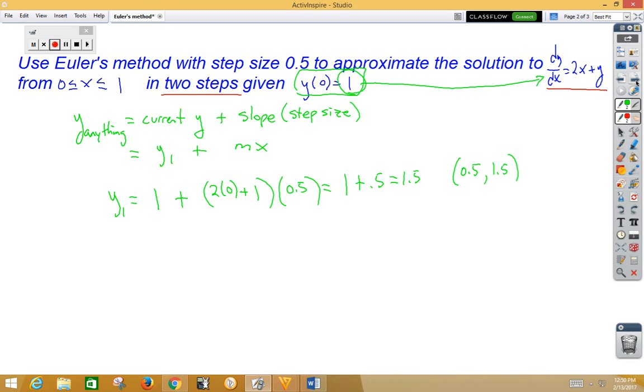Well, now we need to make another step. So we need our current y value, and our current y value is now 1.5. And that comes from this value over here. We want our current slope because we are now at a different place. So we're going to take our current point, plug it into dy/dx to get our current slope. So that would be 2 times 0.5 plus 1.5, and we're going to multiply that by our step size, which is 0.5. If we do that, we get 1.5 plus 1.25, which would give us 2.75.